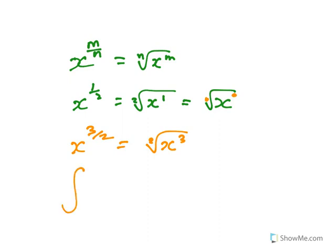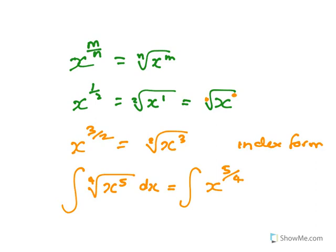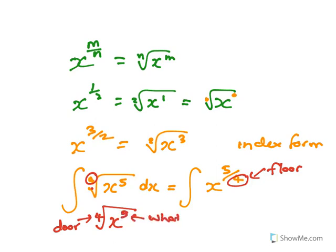If I want to integrate the 4th root of x to the 5, first put it into index form: x to the 5 over 4. A way to remember this is 'at the door is on the floor' - think of this as a house, the 4 at the door is on the floor, so it's on the bottom. What's on top, the 5, stays on top.